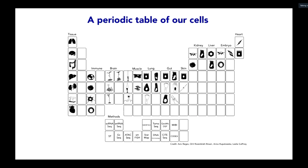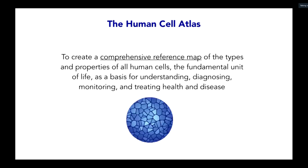All of this has motivated an international community to say we need a periodic table of our cells. At minimum, we need a list of cell types and their characteristics to use as a reference map. At maximum, we want a full model explaining how these cells came to be, what happens when we intervene, and what it means when we see them out of whack. That became the mission of an international community called the Human Cell Atlas, whose goal is to create a comprehensive reference map of the types and properties of all human cells — the fundamental unit of life — and use this as a basis for understanding, diagnosing, monitoring, and treating health and disease.